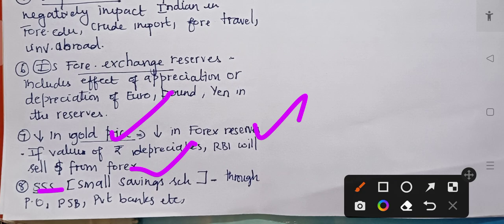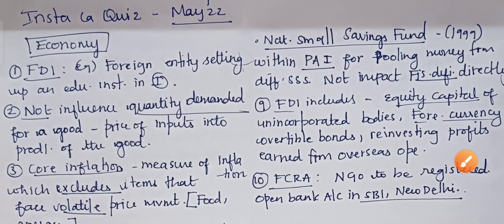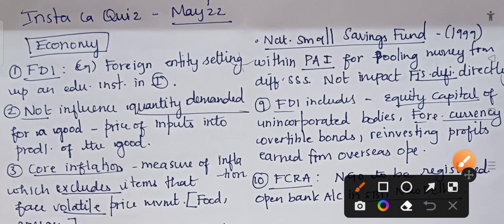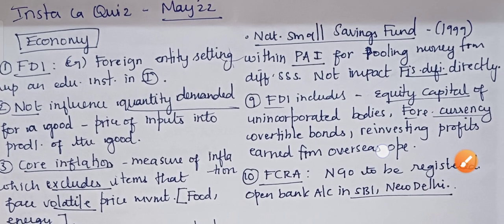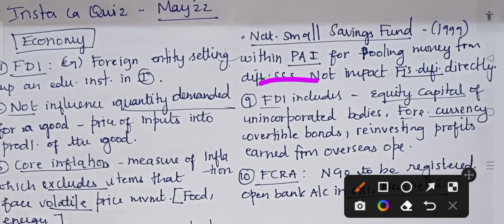Triple S — Small Savings Scheme — is a scheme of the central government running through post offices, public sector banks, and even a few private banks. The NSSF, National Small Savings Fund, was established in 1999. This fund is within the public accounts of India for pooling money from different small savings schemes. It does not directly affect the fiscal deficit because it is taken from the public account, not from the consolidated fund.